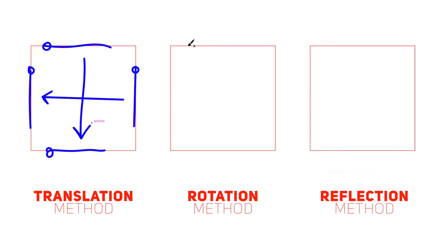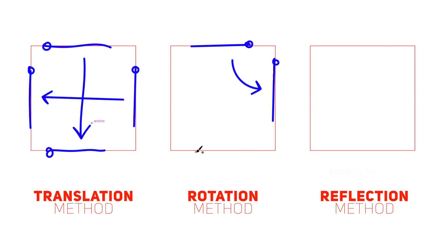In the rotation method, whatever you remove from or add to the geometry, you put it back by rotating it to the adjacent side. Meaning, you rotate the removed portion and place it on the adjacent side.